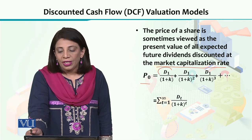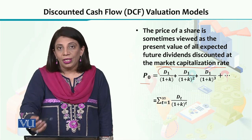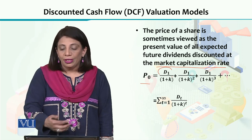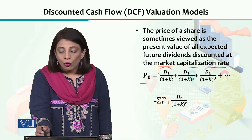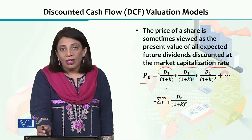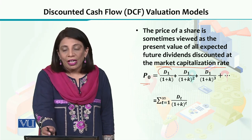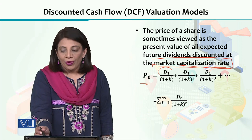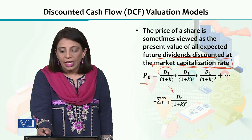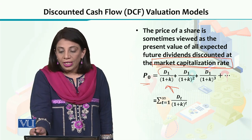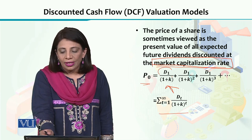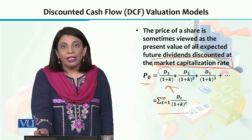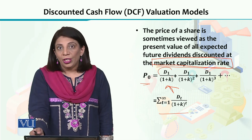If we invest in a fund or share and get dividends from there, we need a market capitalization rate to derive the present value. This rate is represented by K. The formula is written as: the sum (sigma) where t varies from 1 to infinity, of dt divided by (1 + k) raised to the power t.